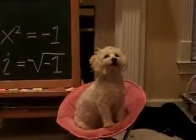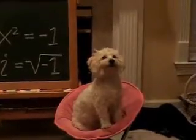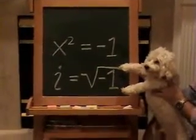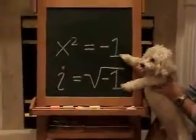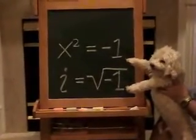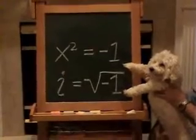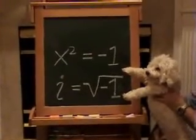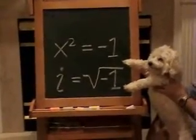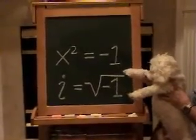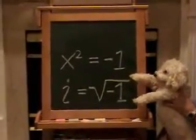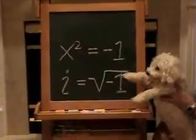Not all quadratic equations have real number solutions. For instance, x squared equals minus 1 has no real number solutions, because the square of any real number x is never negative. To overcome this problem, we mathematicians have created an expanded system of numbers using the imaginary unit i, defined as i equals the square root of minus 1.